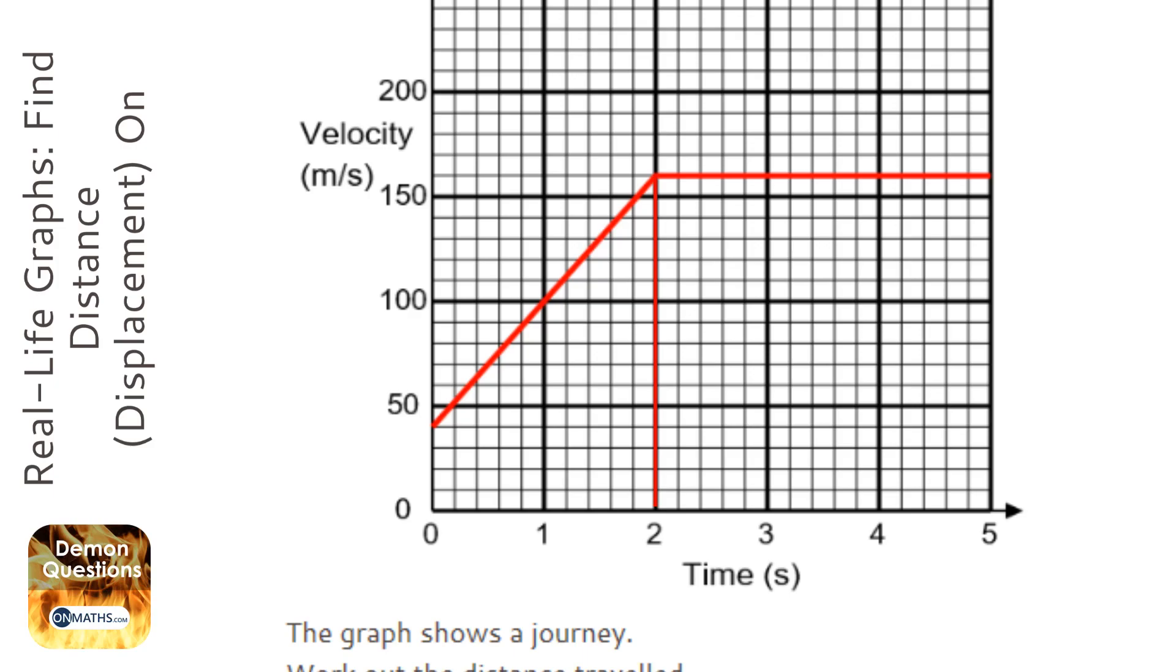We've got a trapezium here and a rectangle here, so we'll tackle the rectangle first. To work out the area, it's the width, which is three, times the height, which is 160, and when you do that you can do it on the calculator if you wish.